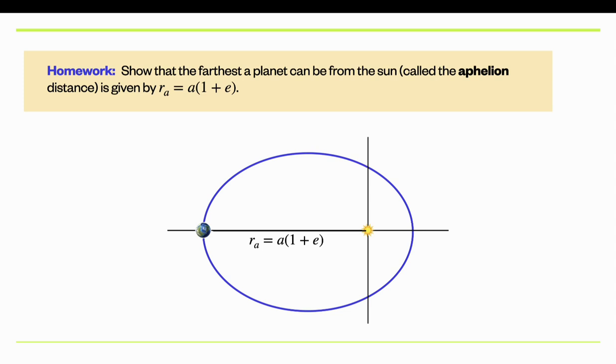So as a homework problem, you want to show that the farthest a planet can get from the Sun is the semi-major axis times one plus e instead of one minus e. So it's just following the previous calculation on the previous slide. But now you want to evaluate it at an angle theta of 180 degrees instead of zero degrees.